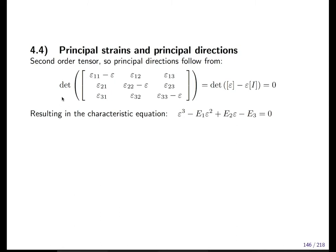You remember the determinant of this matrix — if the determinant is zero, then we can solve it, and this results in the characteristic equation. Here are the invariants of the characteristic equation, and the invariants we no longer call I1, I2, I3. We call them E1, E2, E3 for the strain epsilon.